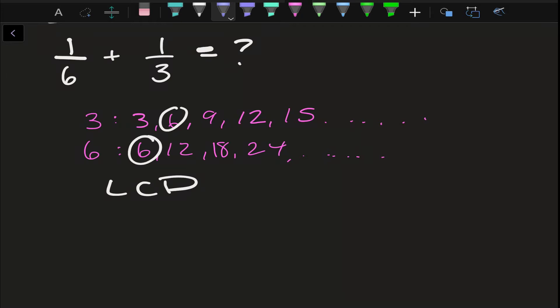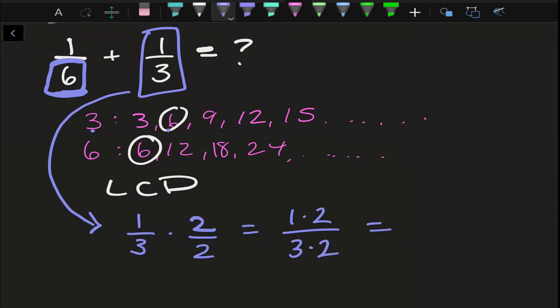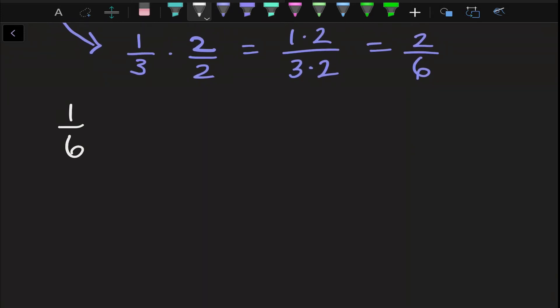Now, the nice thing about this is one of our denominators is already 6. So I only have to change this one fraction. And how can I do that? Well, 3 times 2 is 6, right? And we need 6, as we can see over here. So I'm going to multiply the whole fraction by 2. So I have 1 over 3 times 2 over 2. So that's 1 times 2 and 3 times 2, so I get 2 over 6. So then if I rewrite this, I'm going to have 1 over 6 plus 2 over 6. Now we know we can add the numerators. Same denominator. And we get 3 over 6.